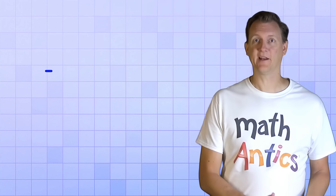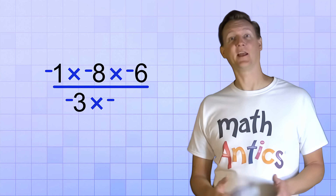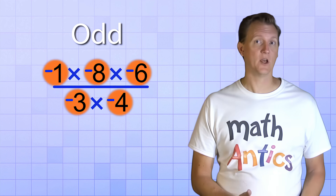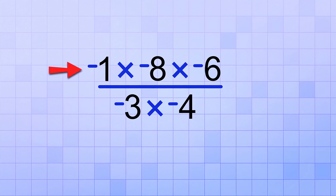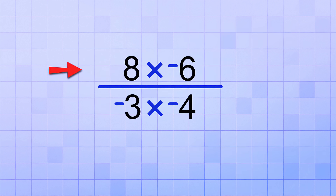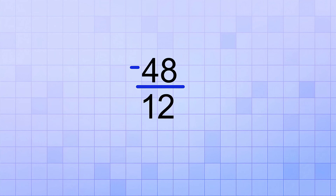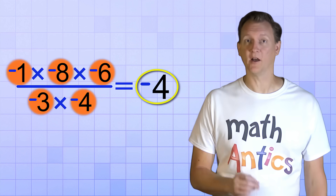Here's another example: negative 1 times negative 8 times negative 6, over the quantity negative 3 times negative 4. All five numbers are negative — that's an odd number of negative factors, so the answer should be negative. On the top: negative 1 times negative 8 is positive 8; positive 8 times negative 6 is negative 48. On the bottom: negative 3 times negative 4 is positive 12. Then negative 48 divided by 12 is negative 4. Our final answer is negative because we had an odd number of negative factors.